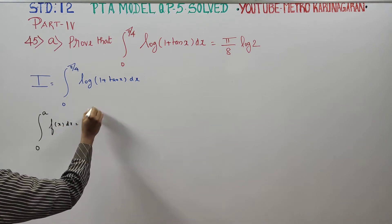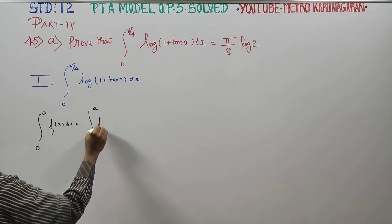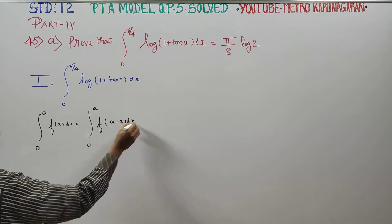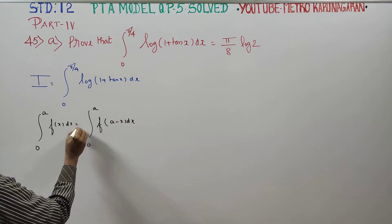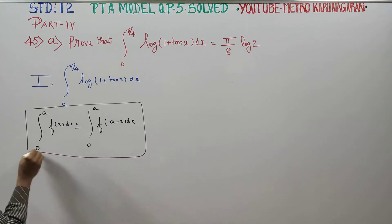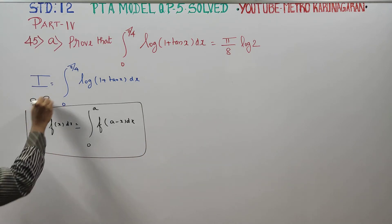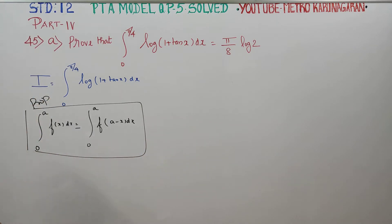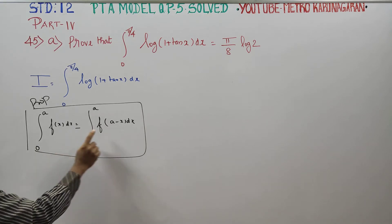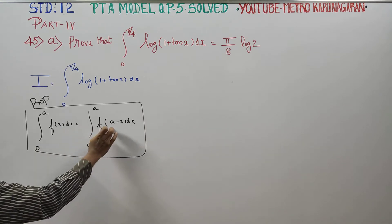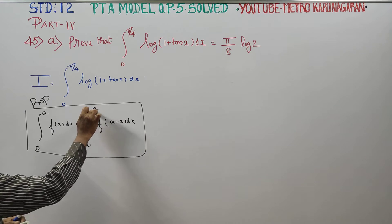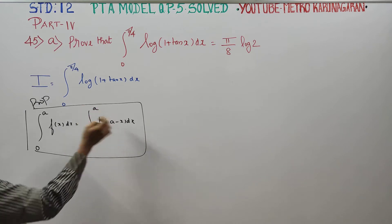I am going to use this property: the integral from 0 to a of f(x) dx is equal to the integral from 0 to a of f(a − x) dx. Here, a is the upper limit, which is π/4.